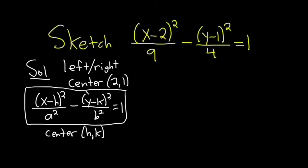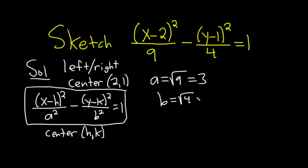You'll notice that a is the square root of this number because a squared is 9. So a is the square root of 9, which is 3. And b is the square root of 4, which is 2.